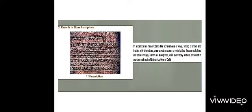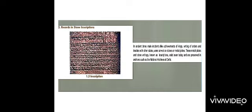Moving on towards our second source of history, i.e. records in stone inscriptions. In ancient times, many incidents like achievements of kings, writing of orders and treaties of other states were carved on stones or metal plates. These metal plates and stone writings are known as inscriptions, and they exist even today and are preserved in archives such as the National Archives of Delhi.